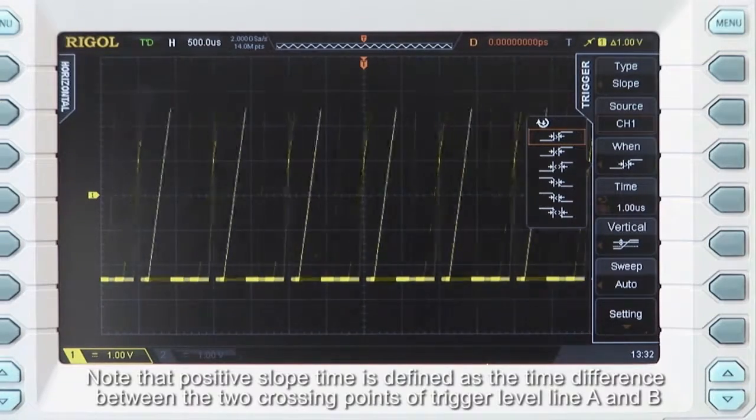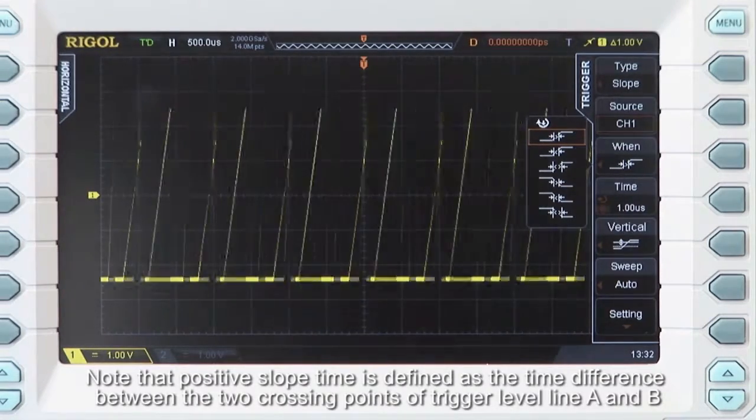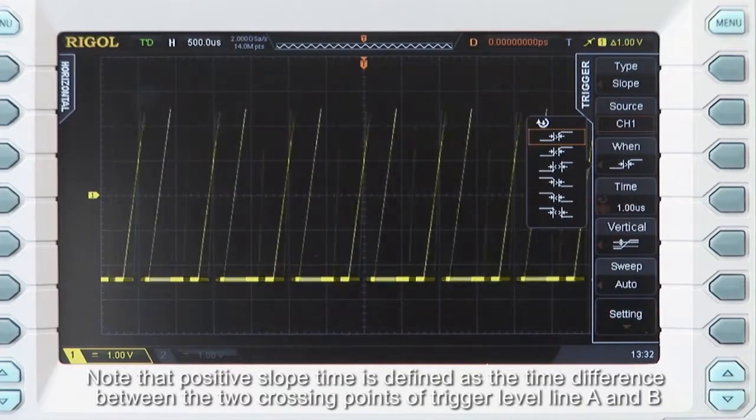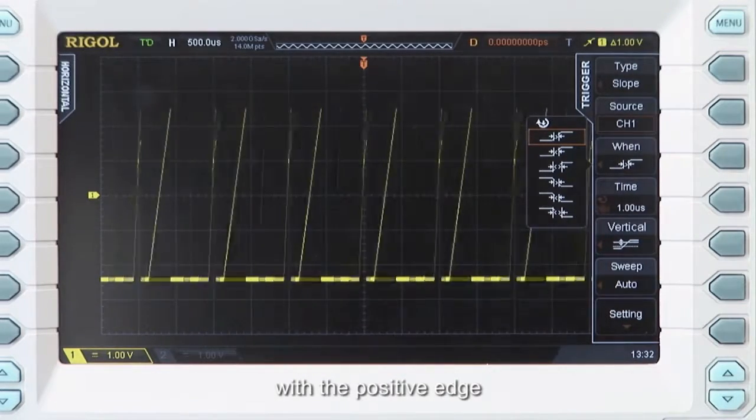Note that the positive slope time is defined as the time difference between the two crossing points of the trigger level lines A and B with the positive edge.